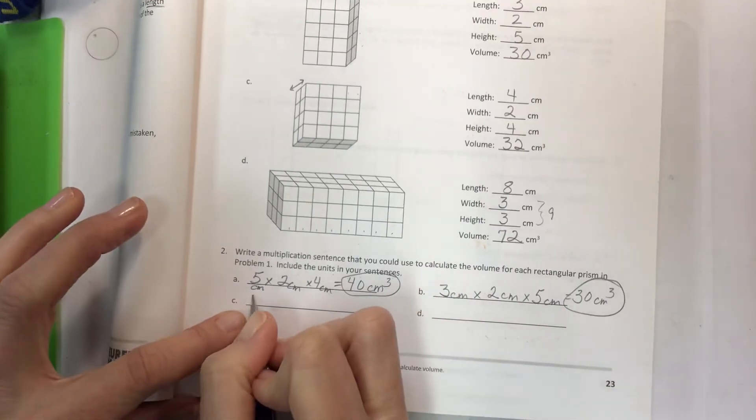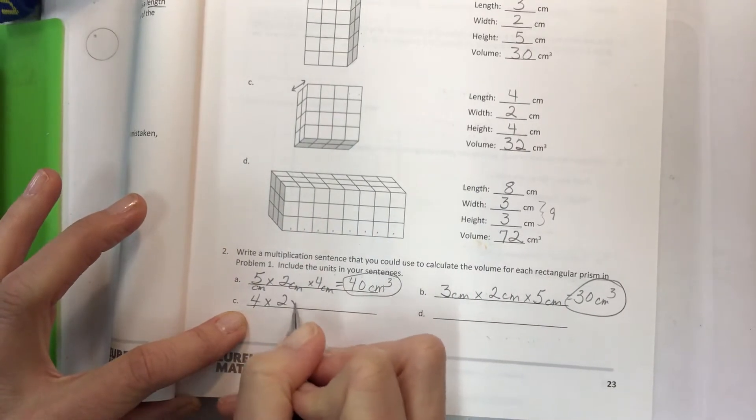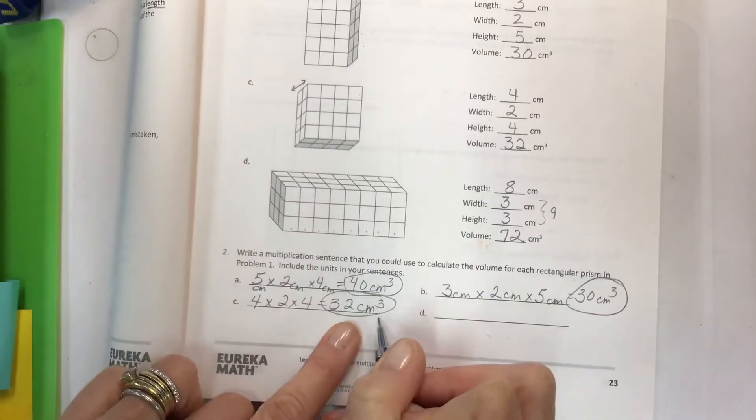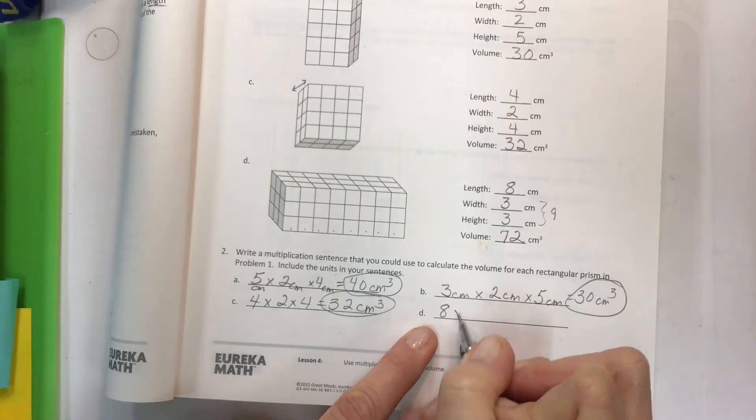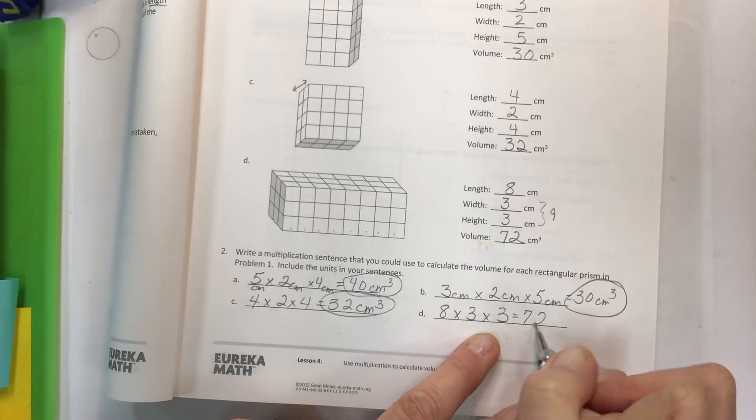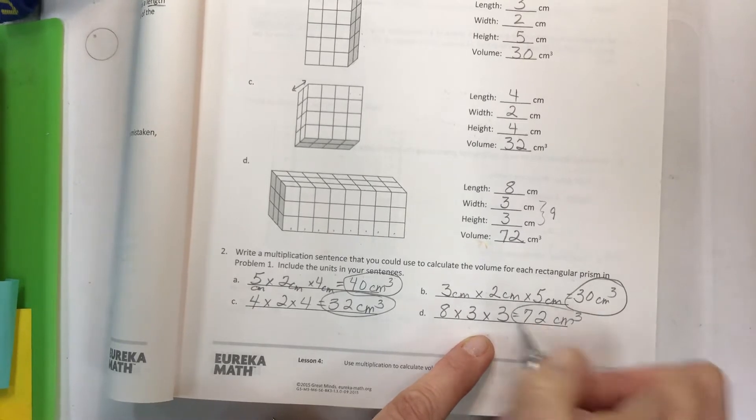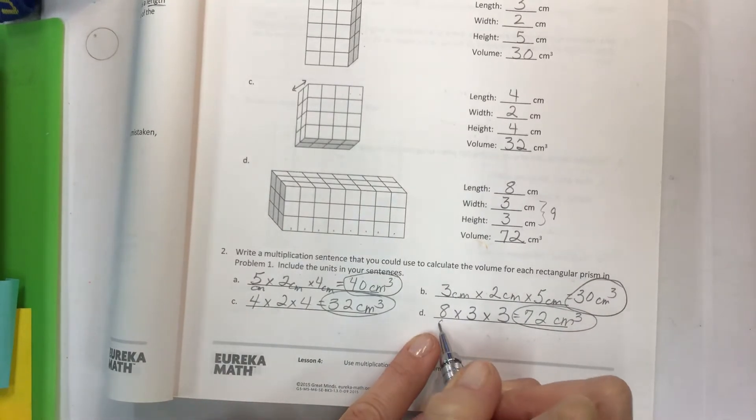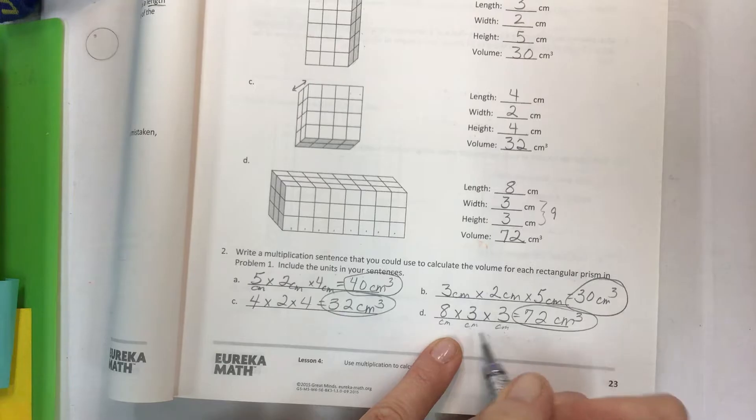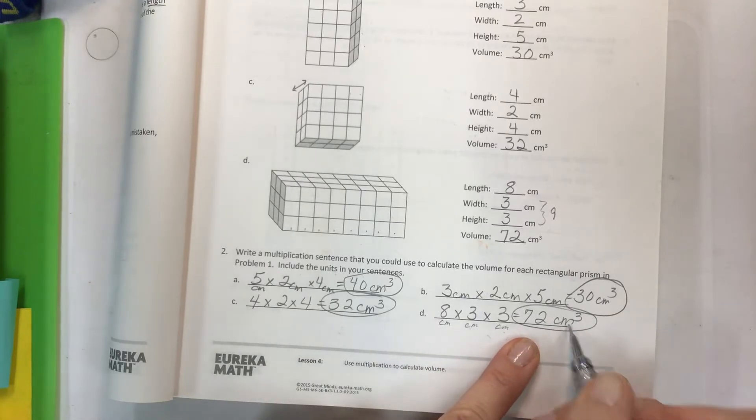Next one, just copy what you have. 4 times 2 times 4, 32 centimeters cubed. Make sure you have your units cubed. 8 times 3 times 3 equals 72 centimeters cubed. And so again these are linear units. You don't square anything. You don't have any exponents. You're just showing yes I know what the unit of measure is and I'm cubing it here.